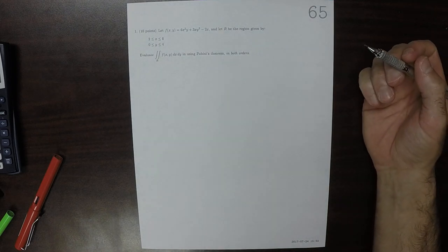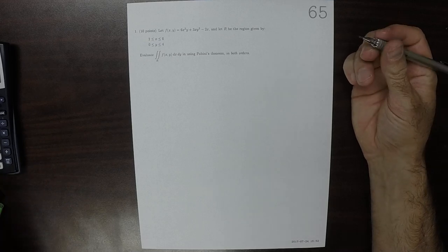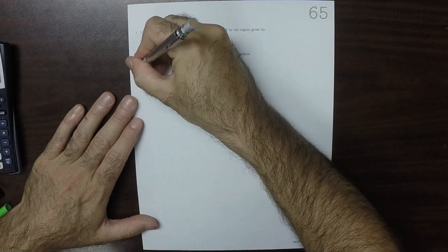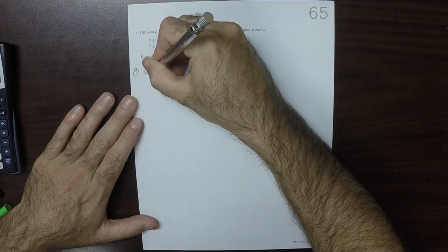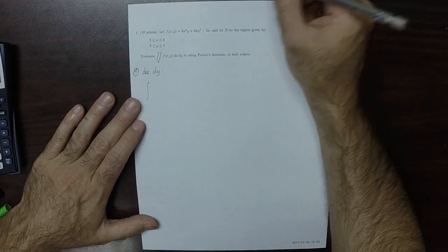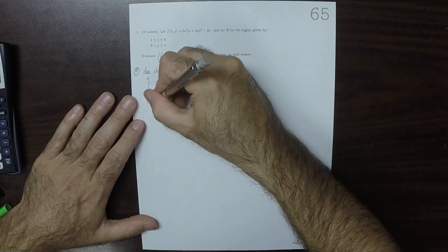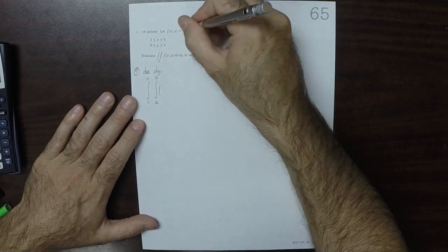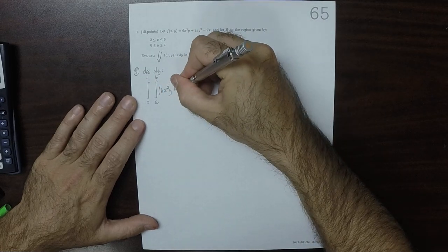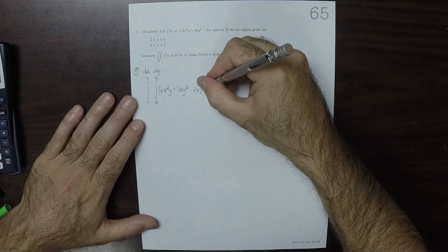This is the solution to Written Homework 65. We'll do it in both orders. So we'll do the dx dy order first. The iterated integral has the y's on the outside, so 0 to 4, 2 to 6, and 6x squared y plus 3xy squared minus 2x, dx dy.